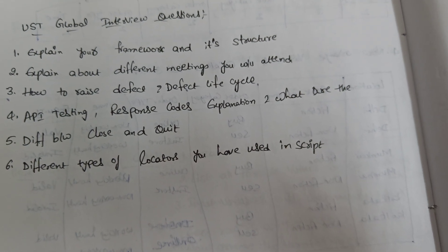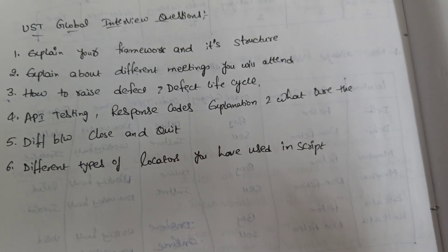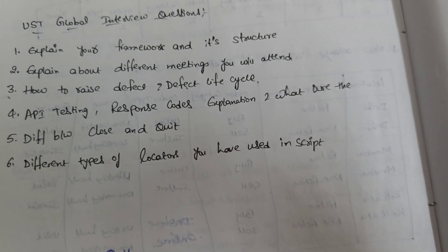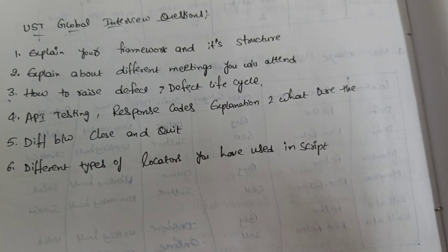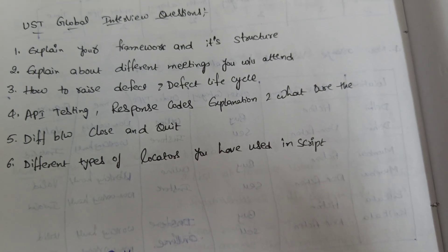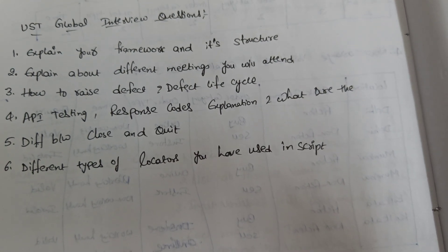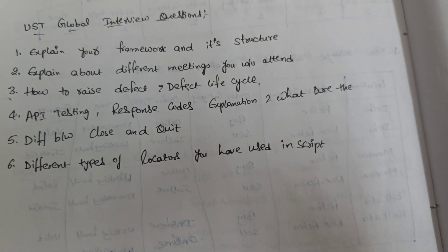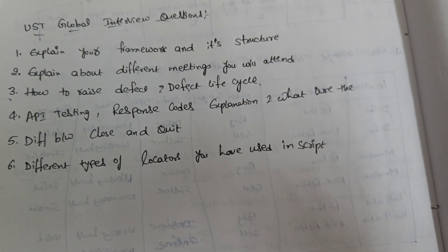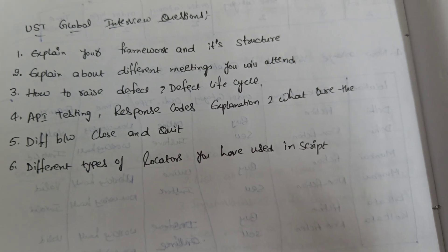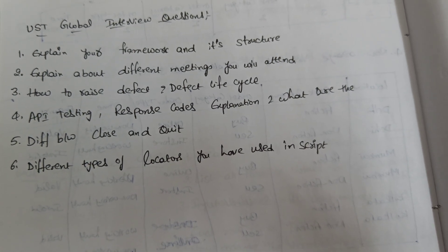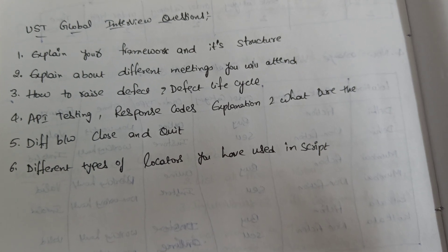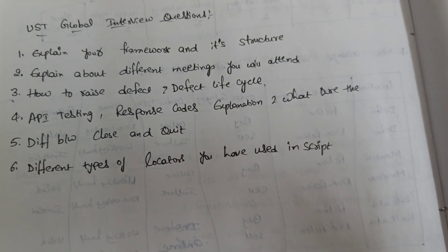You can check the link in the description. The fourth question is about API testing response codes — what are all the different response codes in API testing. I have already done a video on API testing for that. The fifth question is: what is the difference between close and quit.